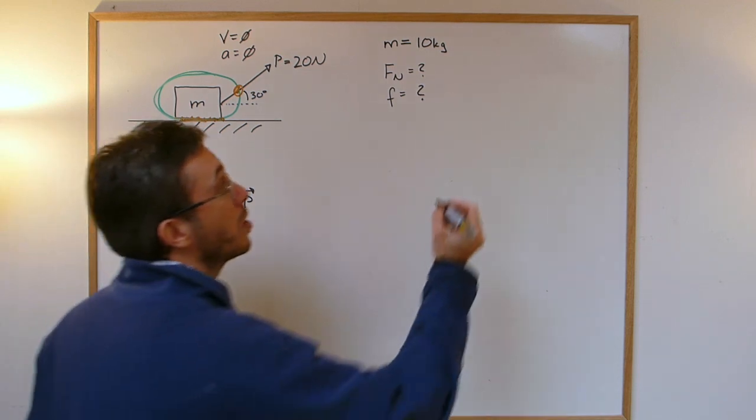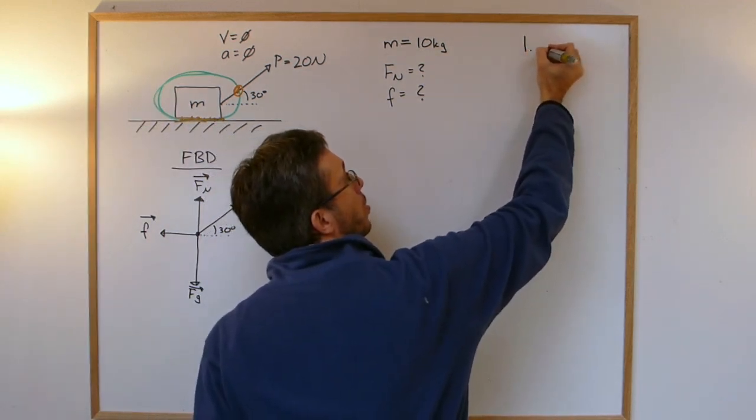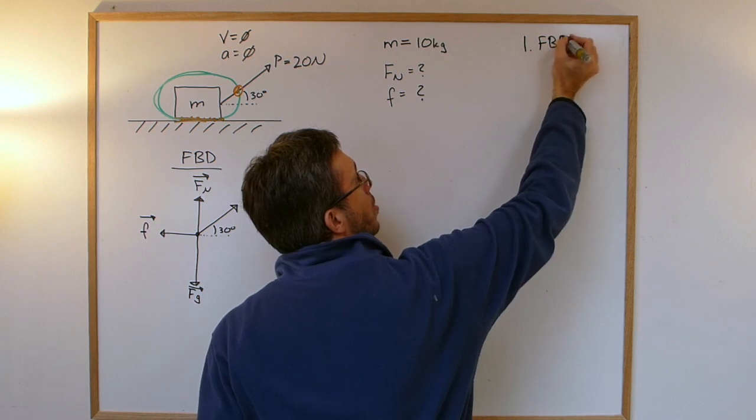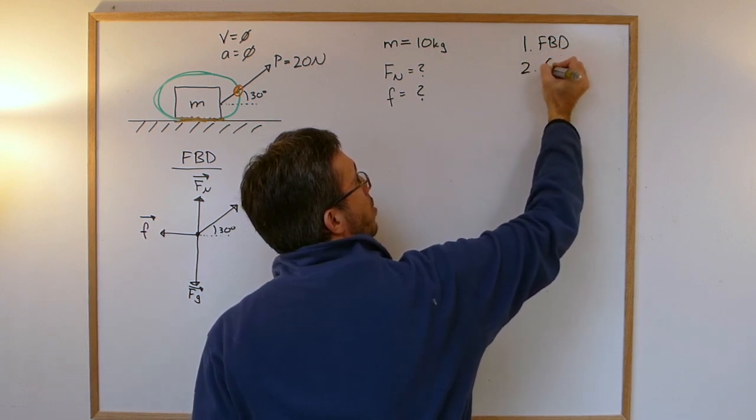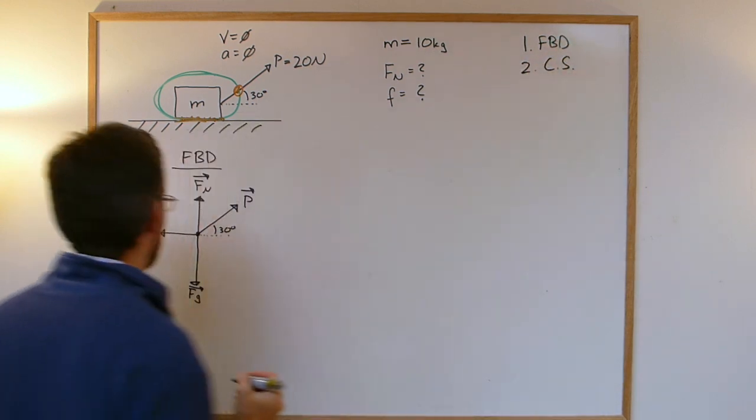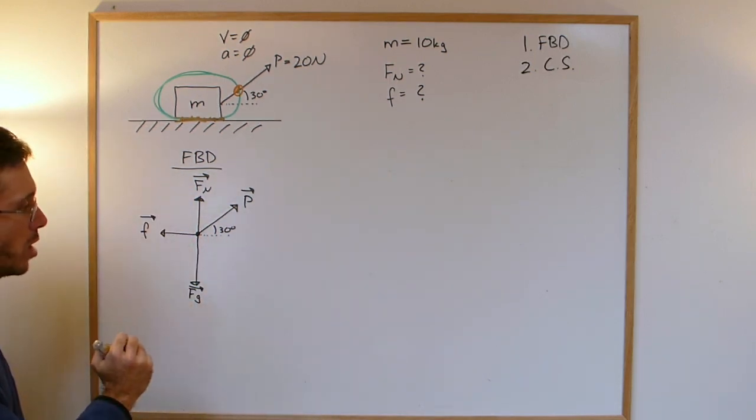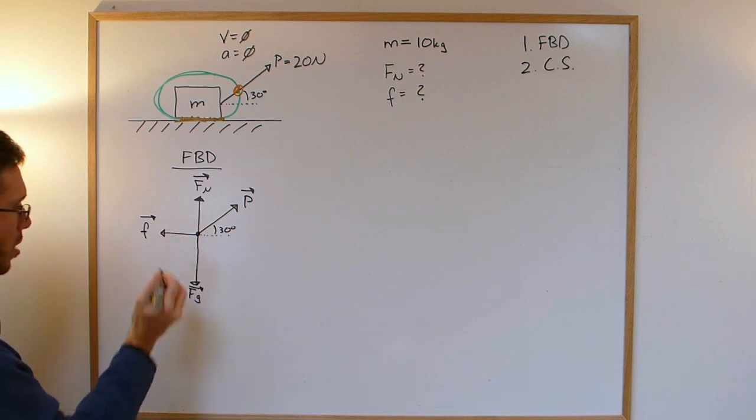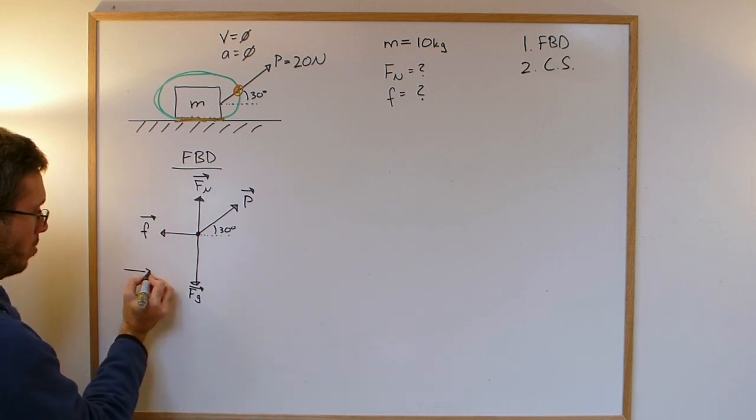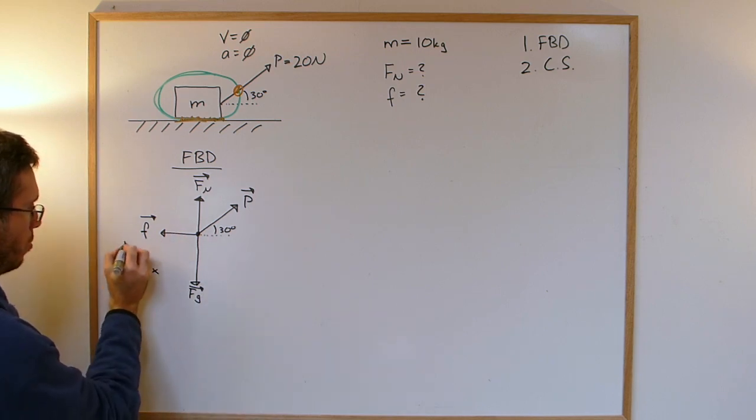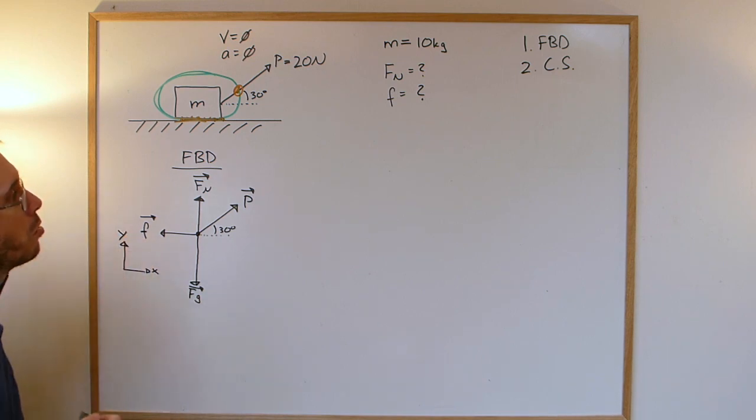So the second step, the first step was the free body diagram. Second step is select the coordinate system. We usually want the coordinate system where as many forces as possible are aligned with it. So in this case, my regular coordinate system, x to the right and y up, should just work out fine. So I have my free body diagram, I have my coordinate system.